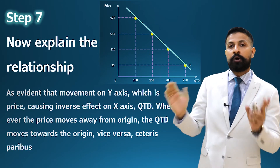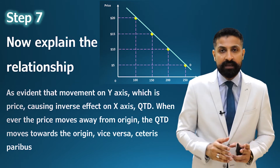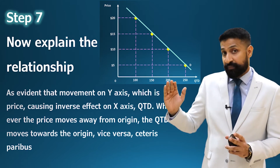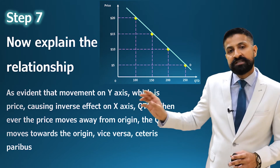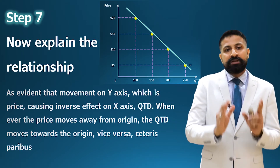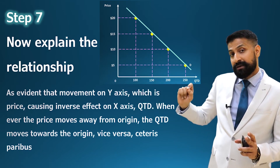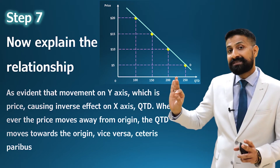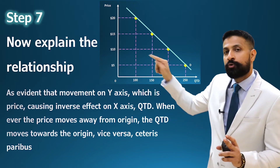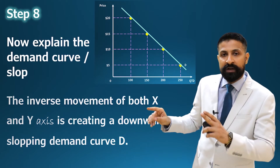Step number seven: explain the relationship between both axes. Write: 'As evident, the movement on y-axis which is price is causing an inverse effect on x-axis QTD. Whenever the price moves away from the origin, the QTD moves toward the origin, and vice versa, ceteris paribus.' This explains the relationship between price and quantity demanded.